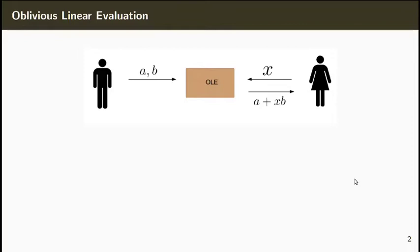Oblivious linear evaluation, or OLE, is a protocol between a sender and a receiver. The sender holds two values, A and B from a finite field, and the receiver holds a value X, also from the finite field. In the end, the receiver should learn A plus XB.